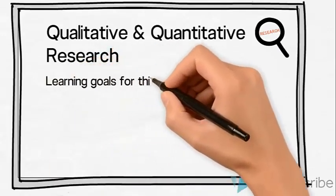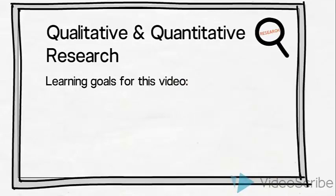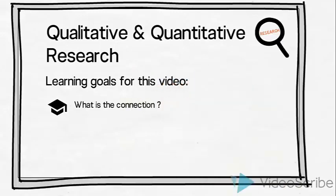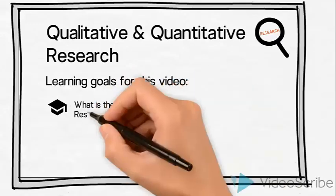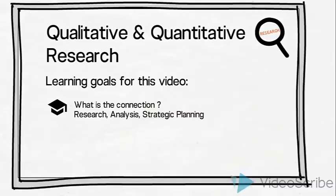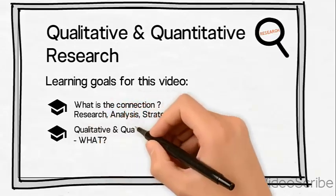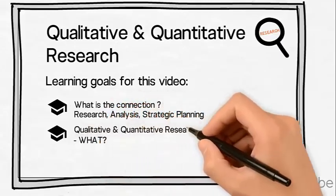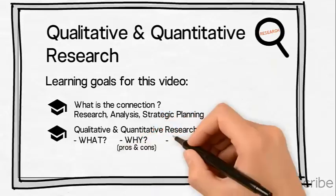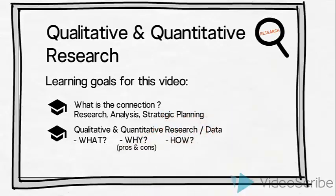Before we start, let us list the learning goals for this video. Firstly, the goal is to establish a connection between qualitative and quantitative research and the rest of the research, analysis and strategic planning process. Secondly, the goal is to gain an understanding of what qualitative and quantitative data is, the pros and cons of each, and how we can conduct these two types of research.